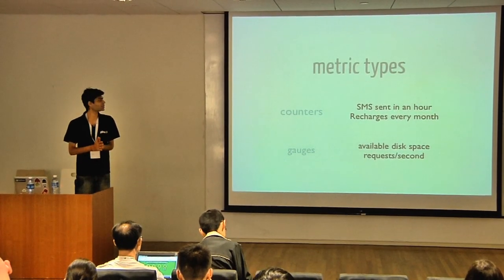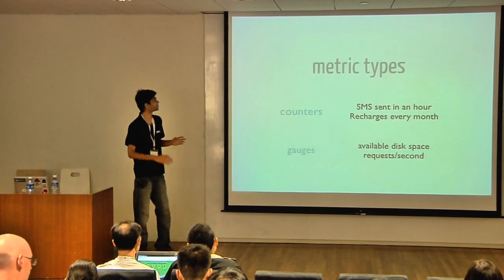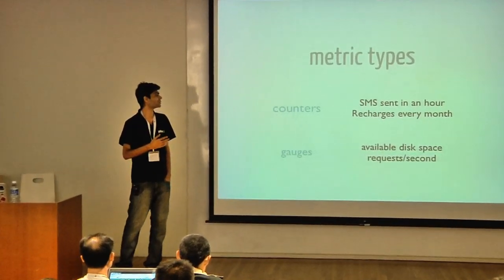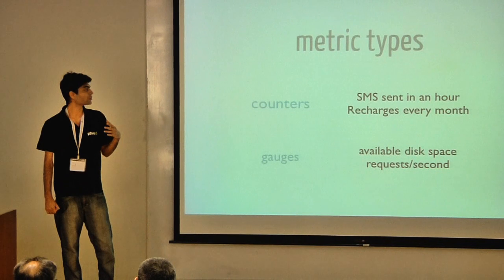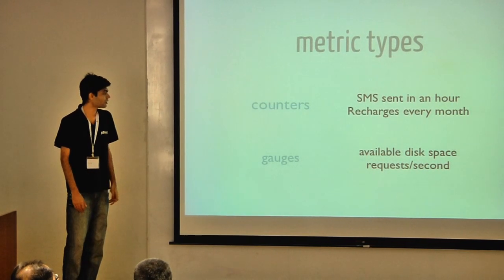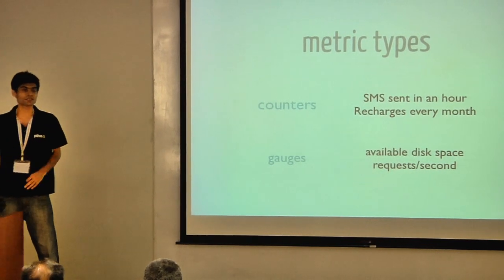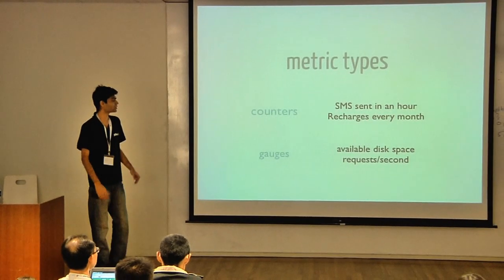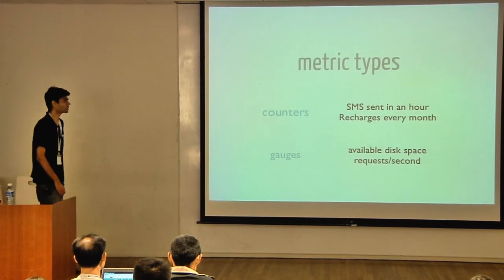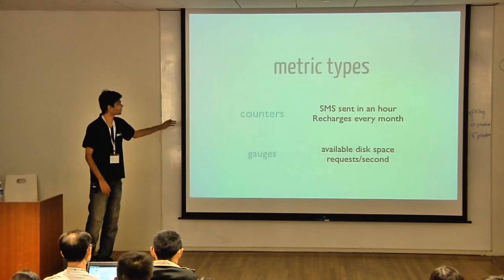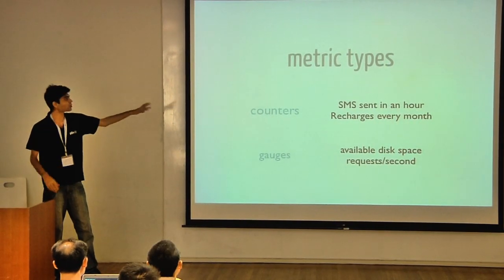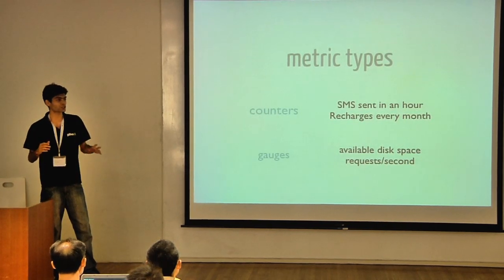Graphing has a lot of data structures. There are counters — you keep incrementing something every time frame, like a count of SMS sent in an hour or recharges done every month. There is also Gauge, where things keep increasing as well as decreasing, like disk space available on a system or requests per second on query APIs. There is also something called RRD tool, which is the round robin database tool and has a completely different architecture for its data structure.